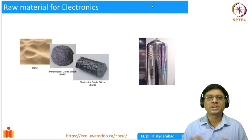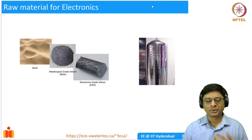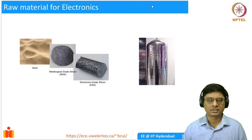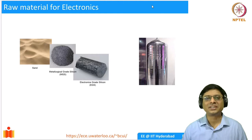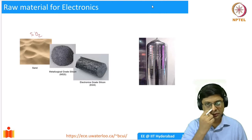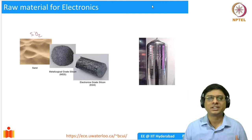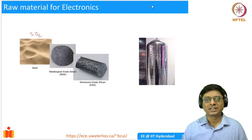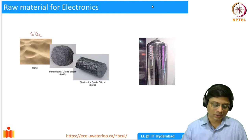So if you look at semiconductors — we talked about silicon — but it actually is made from silica sand. If you go to beaches you see lots of sand, which has huge amounts of silicon in it. It is SiO₂. Sand is simply silica, which is SiO₂. So you add some carbon and do some chemical reactions and purify it to a level of a few parts per billion or even more.